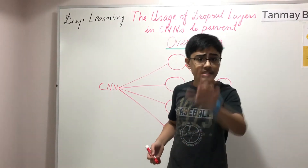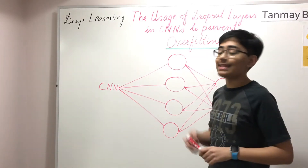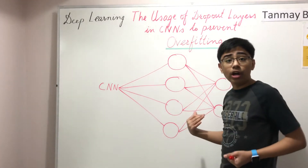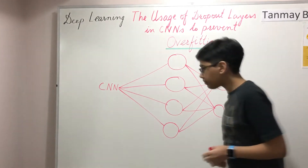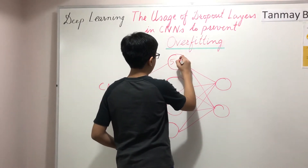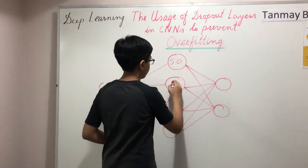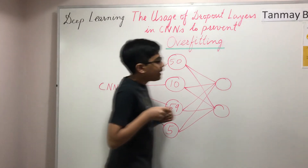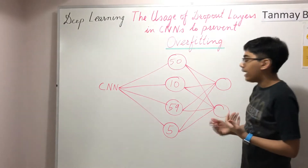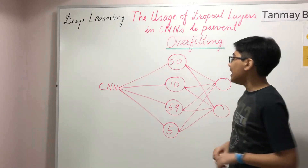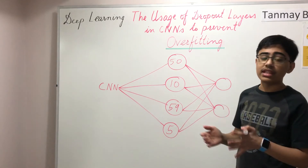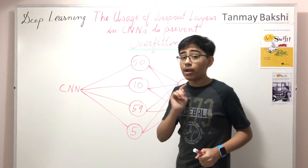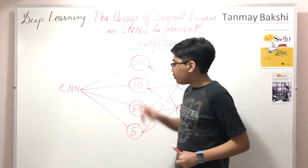Let's say we implement a dropout layer with a probability value of 50%. There is a 50% chance that any neuron here can be dropped out. Each neuron in the hidden layer is assigned a random value from 1 to 100 — let's say those values are 50, 10, 59, and 5. The logic behind choosing the 50% random dropout isn't just generating a random number from 1 to 50, but this is how I'll represent it to show there's a 50% probability that any one of these neurons will be dropped out.